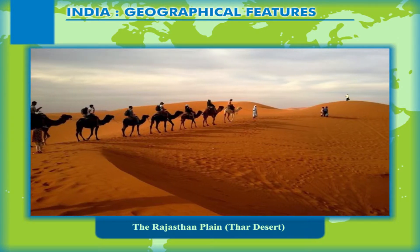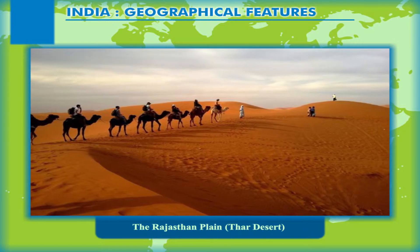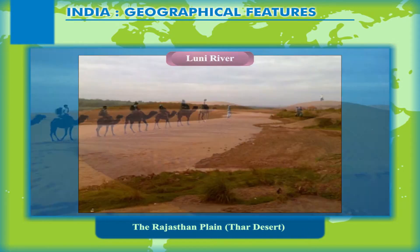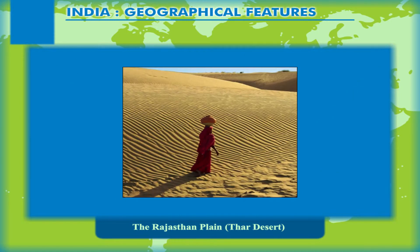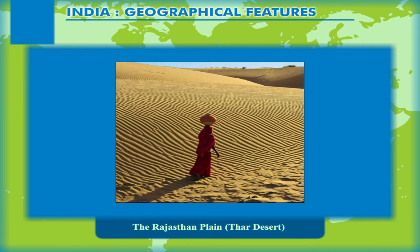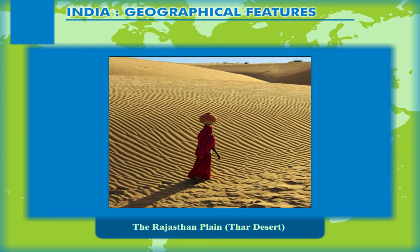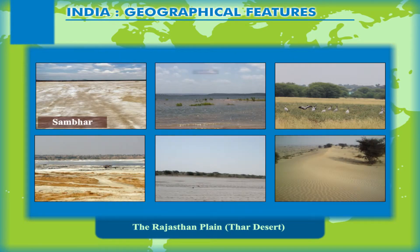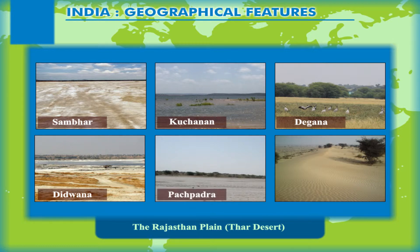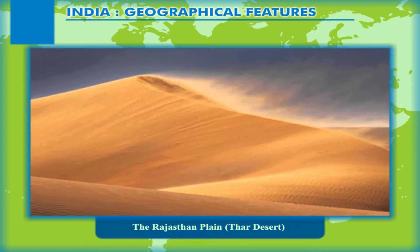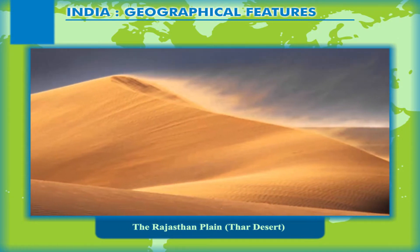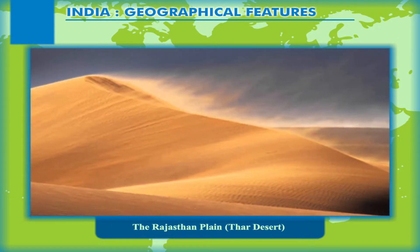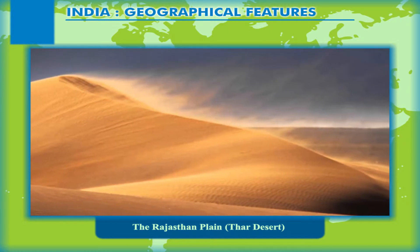This plain is also known as the Rajasthan plain, Marusthali, Thar, or the Great Indian Desert. It is mainly an arid plain drained by several seasonal rivers including River Luni. This part of the northern plains is mainly covered with sand dunes and a number of salt lakes like Sambhar, Kuchaman, Degana, Didwana, Pachpadra and Lunkaransar. This plain is dominated by the work of wind and not rivers, unlike other parts of the northern plains.